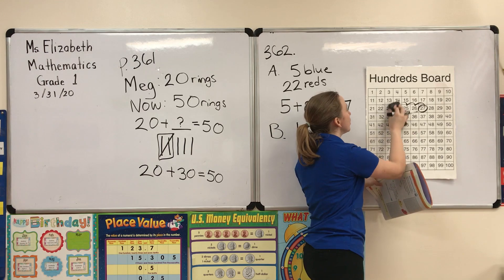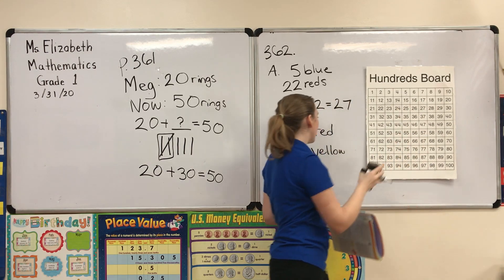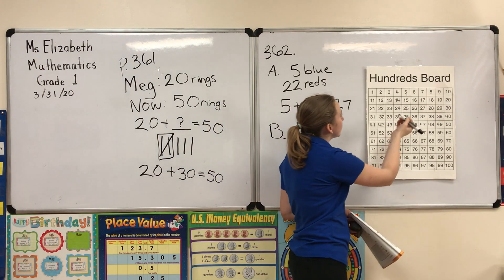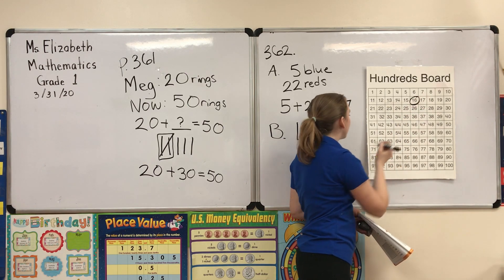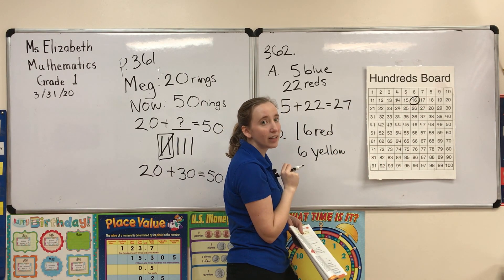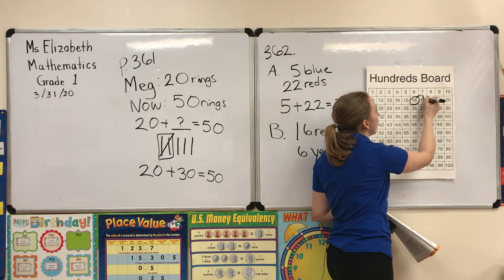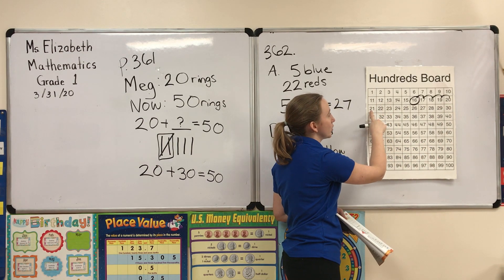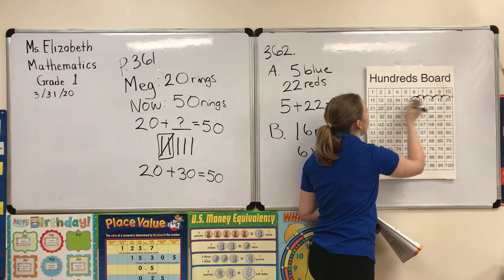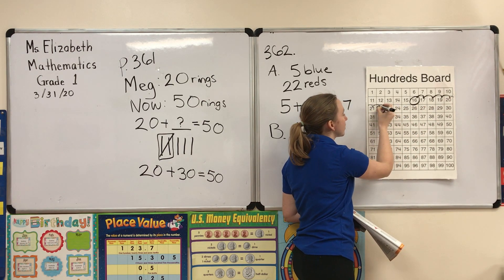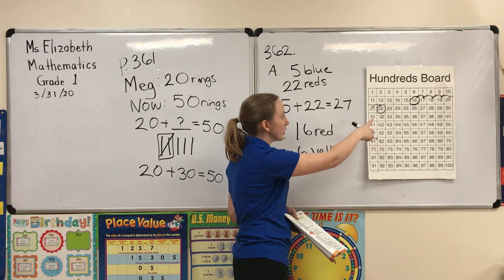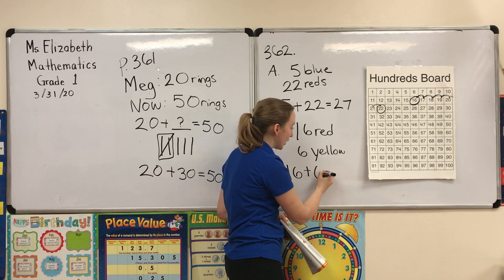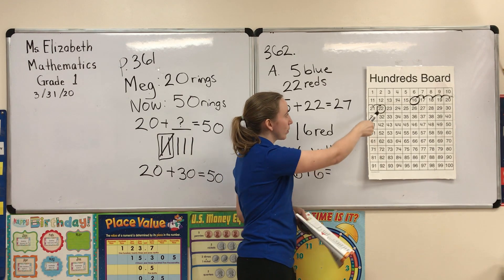We're going to use the hundreds chart to help us solve this equation. We're going to start with 16. We are adding six yellow hats, so we go: one, two, three, four — when we get to the end of the row we continue on to the next one — five, six. We stop at 22. Our equation is: 16 plus 6 equals 22.